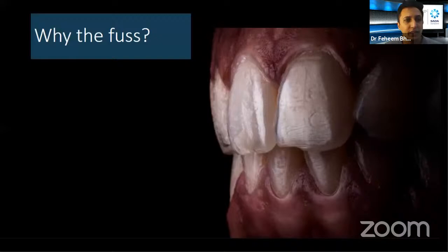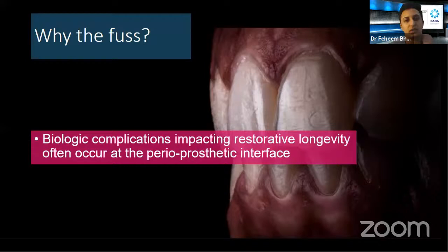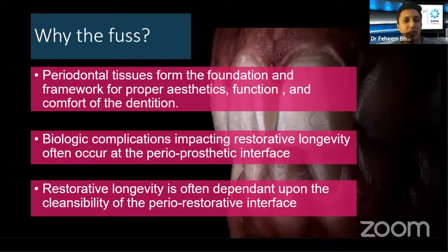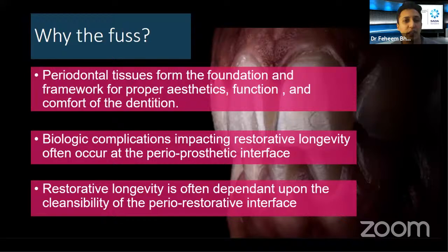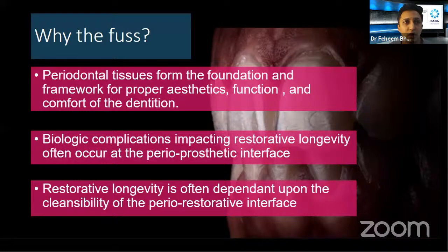So why the fuss? Biological complications obviously impact restorative longevity, and these biological complications usually occur at the perio-prosthetic interface — the marginal zone between the gingival tissue and the restorative margin. As periodontal tissues form the framework and foundation for proper aesthetics, function, and comfort of the dentition, longevity is often dependent upon the cleansability of the type of restoration we provide. The interplay between periodontics and restorative dentistry involves the location of the restorative margin, the crown contours, and the response of the gingival tissues to the restorative preparation as well as the materials placed underneath.